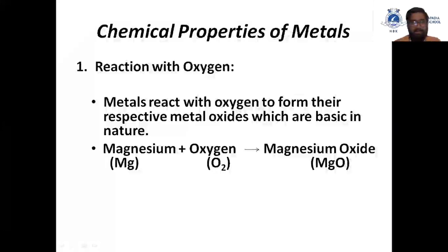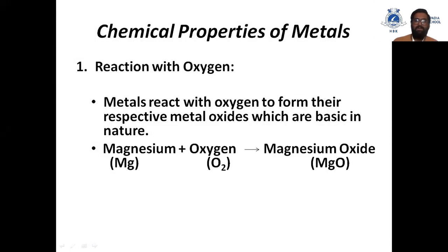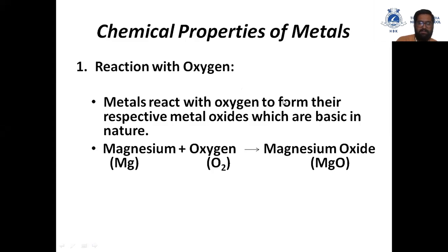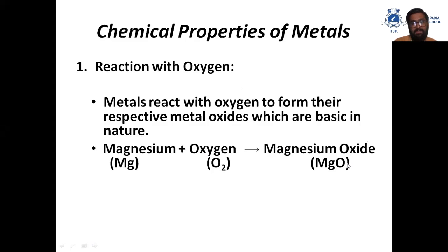Now we will study some chemical properties of metals. The first one is reaction with oxygen. Metals react with oxygen to form their respective metal oxides, which are basic in nature. For example, when magnesium metal reacts with oxygen, it forms magnesium oxide, which is basic in nature.